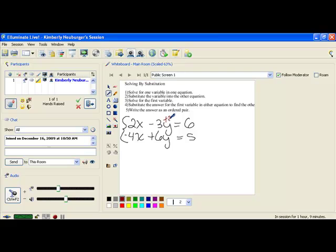So I'm going to add 3y to both sides. And what I end up with is 2x equals 6 plus 3y.